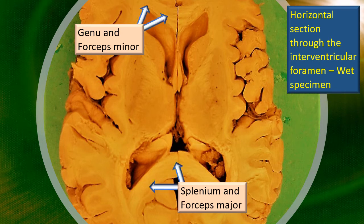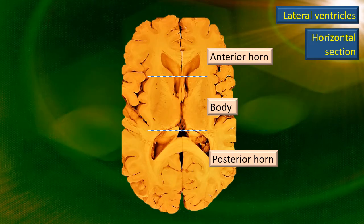Those two dotted blue-white dashed lines give a rough demarcation. The body is the middle part. The anterior horn is in front of the upper dashed line, and similarly the posterior horn is behind the lower dashed line. However, being a horizontal section at the level of the interventricular foramen, the inferior horn is not seen. For that, we will use a horizontal section with the temporal lobe dissected — a museum specimen.